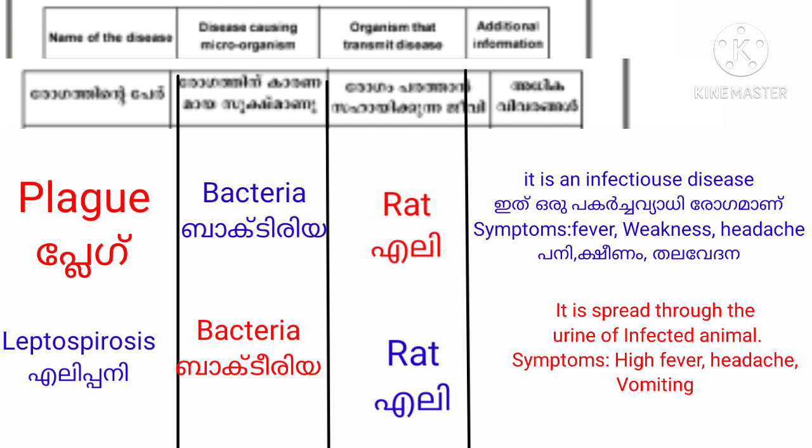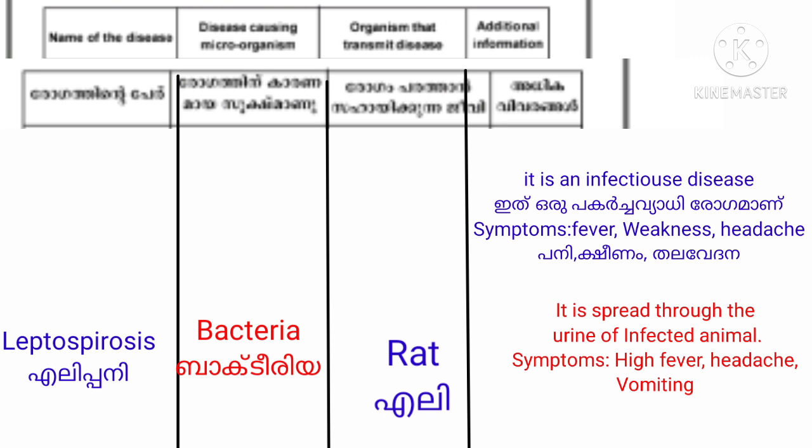The next disease is Leptospirosis. The disease-causing microorganism is Bacteria. The organism that transmits the disease is Rat. Additional information: it is spread through the urine of infected animals. Symptoms include High Fever, Headache, and Vomiting.